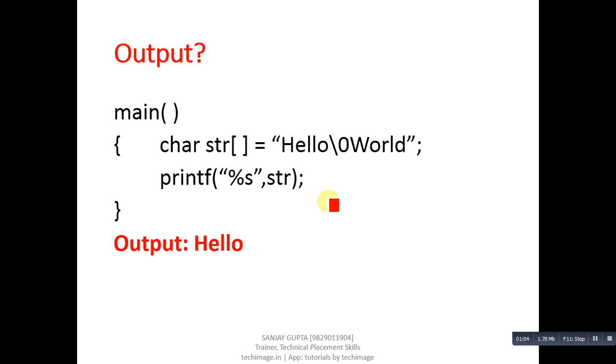This is another code segment. Here str is a string containing 'hello\0world', then printf is printing value of str. Its output will be 'Hello'. In this string, after hello, backslash 0 is inserted, and another backslash 0 will be inserted after D automatically.